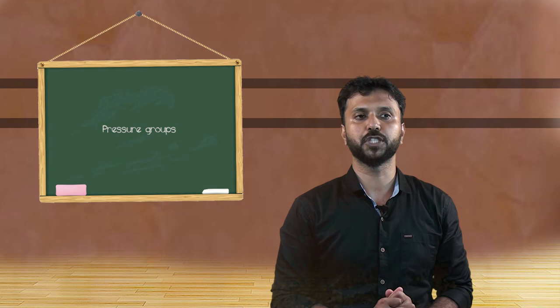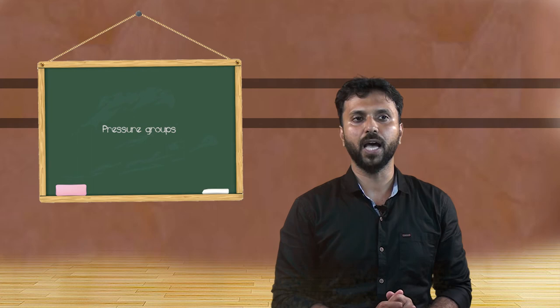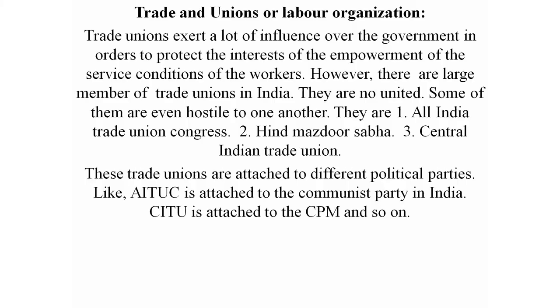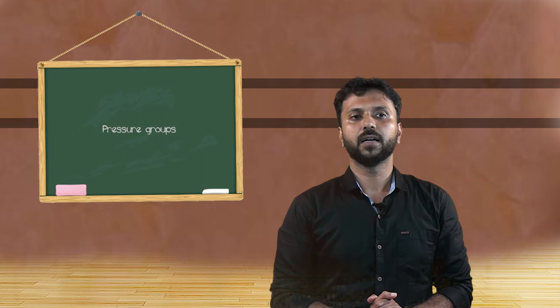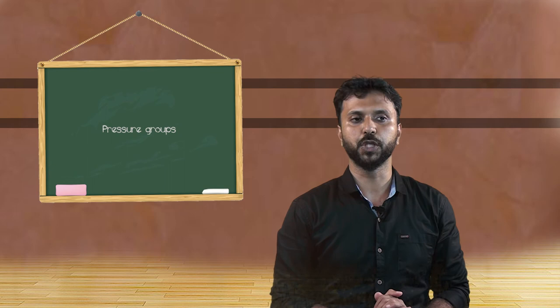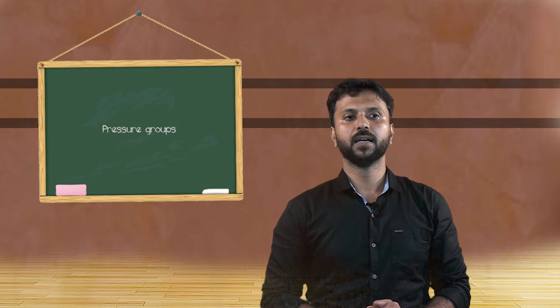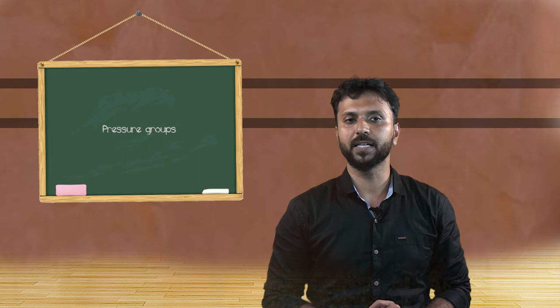Trade unions are labor organizations that exert a lot of influence over the government to protect the interests and service conditions of workers. However, there are a large number of trade unions in India and they are not united — some are even hostile to one another. These include the All India Trade Union Congress (AITUC), Hind Mazdoor Sabha (HMS), and Central Indian Trade Union (CITU). These trade unions are attached to different political parties — for example, AITUC to the Communist Party of India and CITU to the CPM.